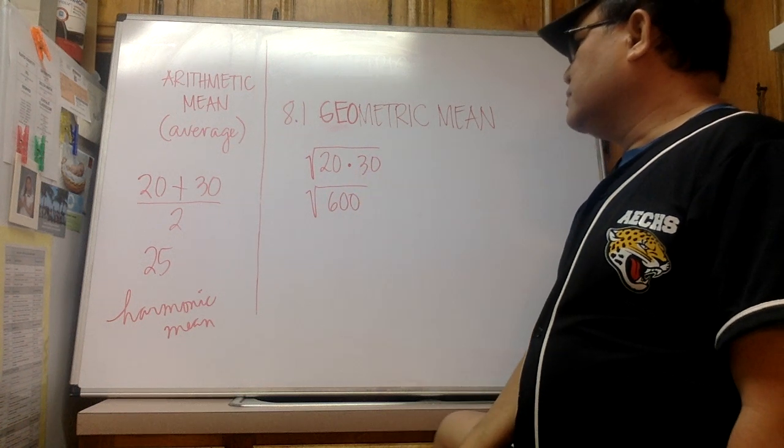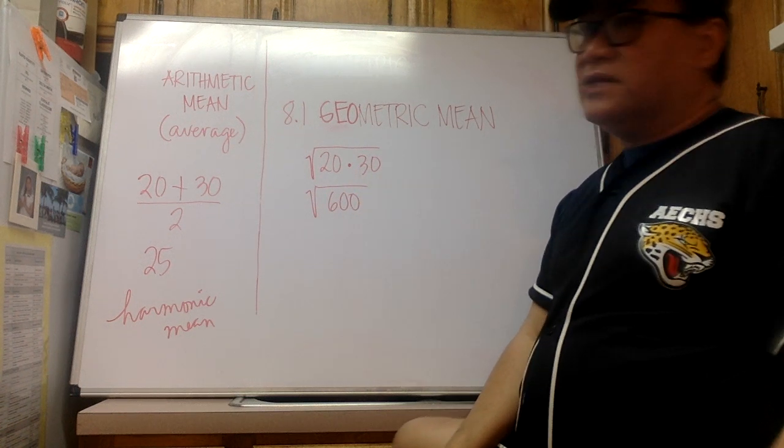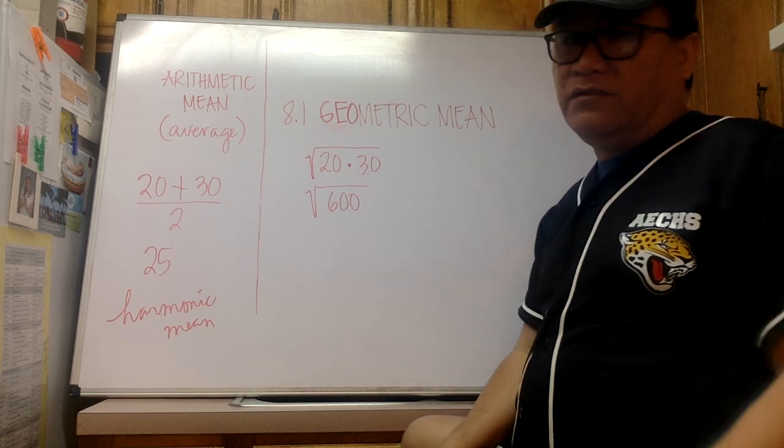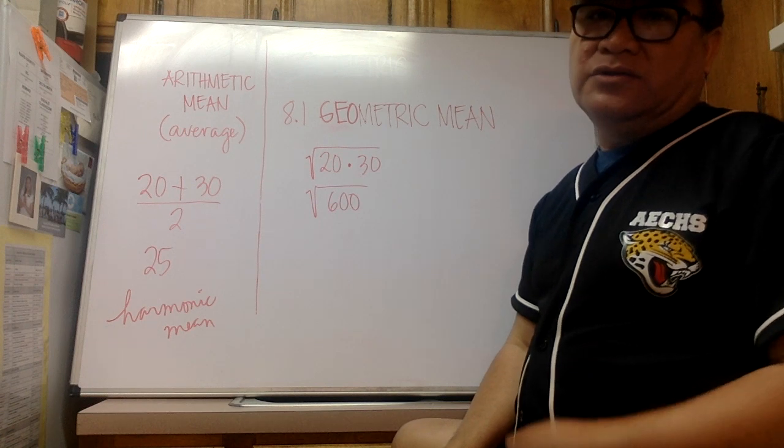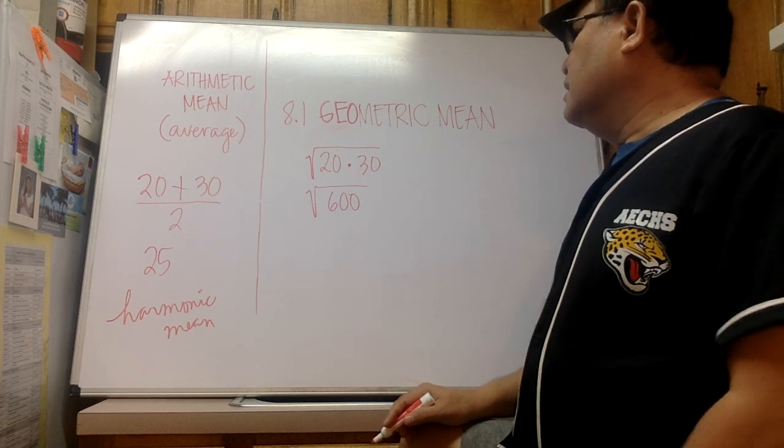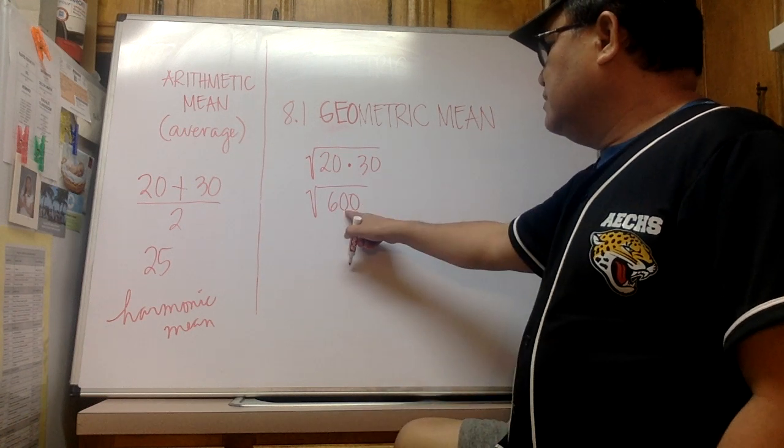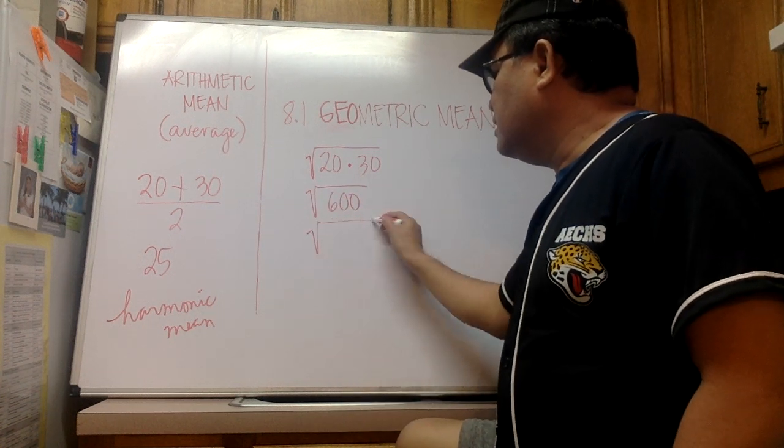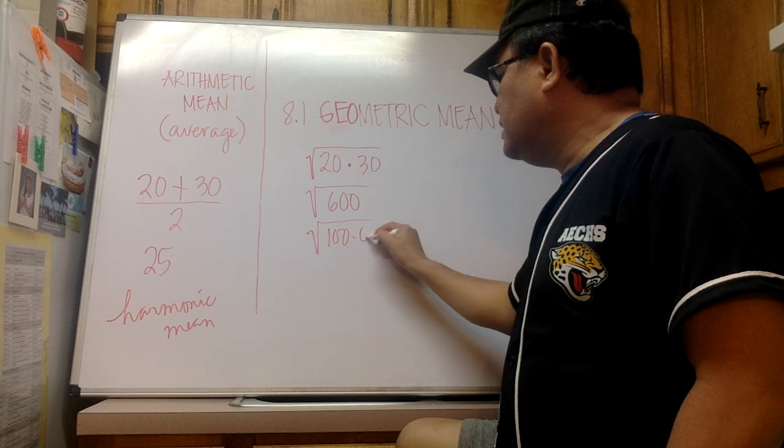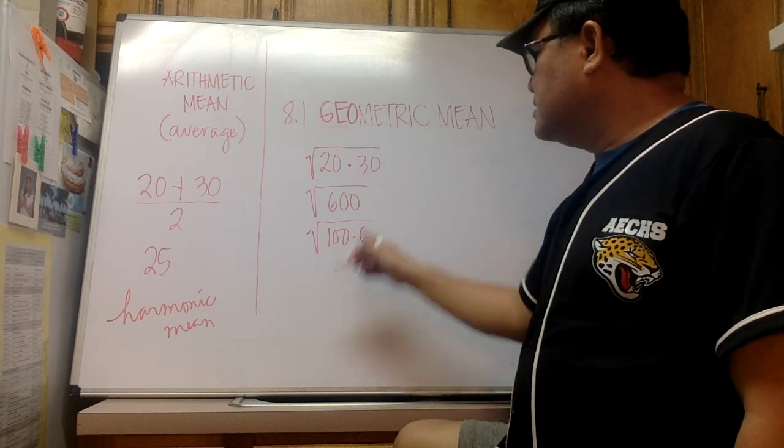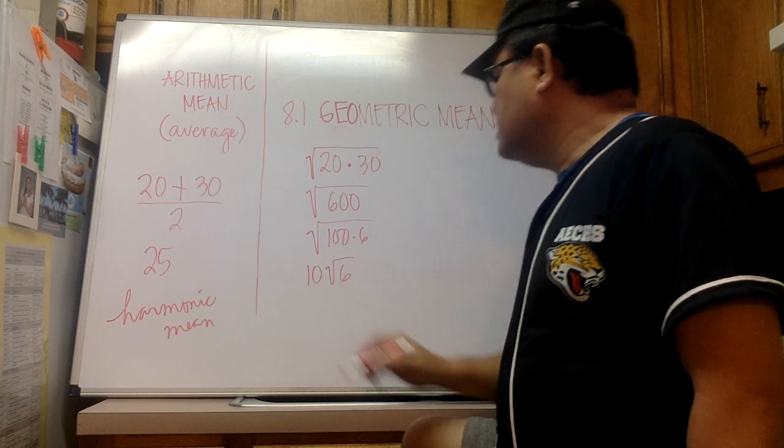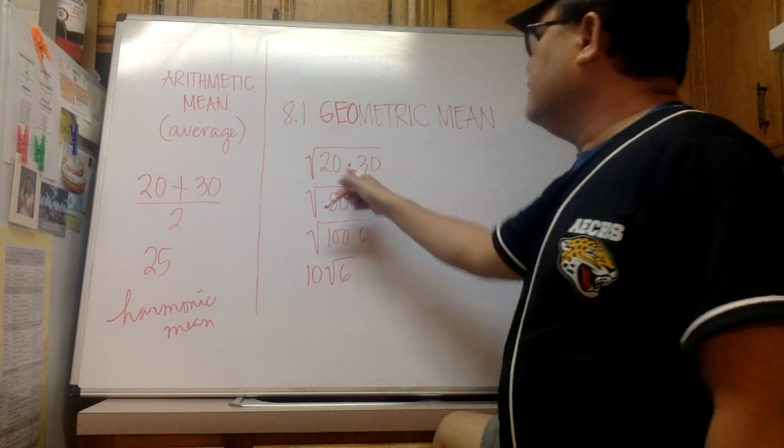20 times 30 is equal to 600, right? 2 times 3 is 6 and we have a couple of zeros, so we have the square root of 600. And just like in the past, whenever we have a radical for our answer we need to try to simplify. Square root of 600, this is the same thing as square root of 100 times 6, right?